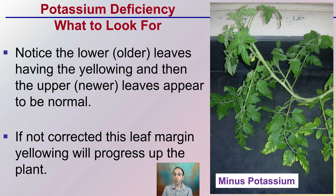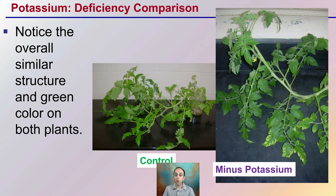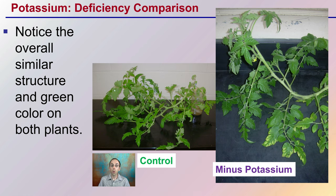On the older leaves, you can see that yellowing starting. The newer growth, however, may look perfectly fine and normal. Keep in mind that while they look normal now, if no corrective measures are taken, they will start to exhibit the same yellowing. So it's important to look at those older leaves and not dismiss them as just dying off — this could be a sign of something progressing through the plant. Compared to the control plant, the newer growth looks very similar, but we do not see that yellowing of the leaf margins of the older leaves in the control plant that was fed a balanced fertilizer.